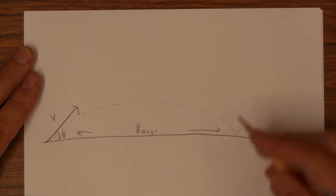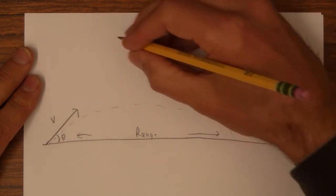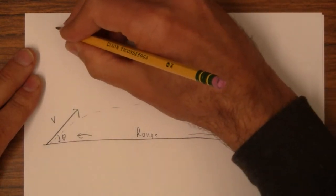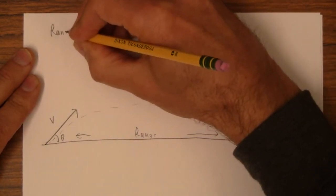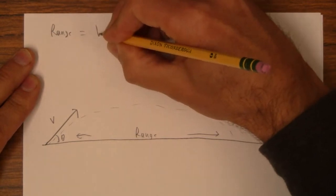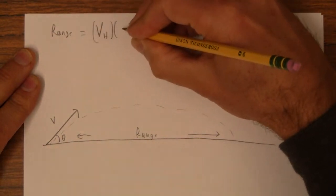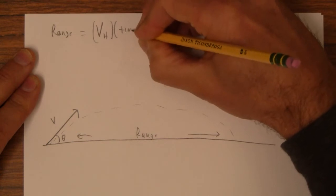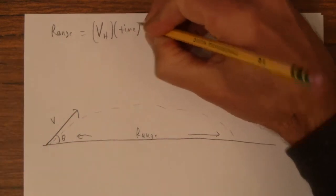Basically, the basic thing that's going to go on with the range equation is that the range is going to equal whatever the horizontal velocity is times the hang time that it's in the air.